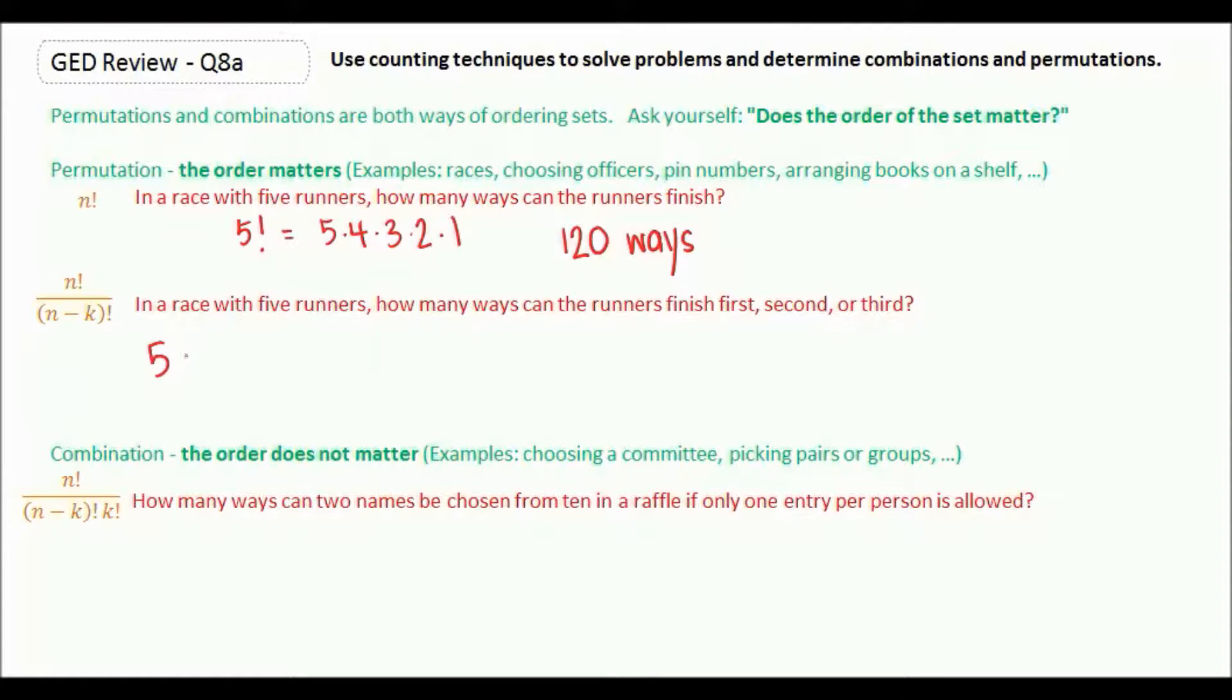There should be some function for permutation, usually NPR. And if we're choosing three people, we would say three, and the calculator will do it for us. However, right now we don't have a calculator, so we're going to do it the old-fashioned way. And that's using this formula here.